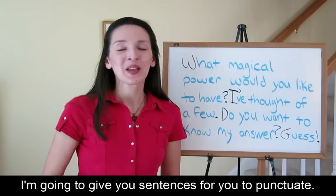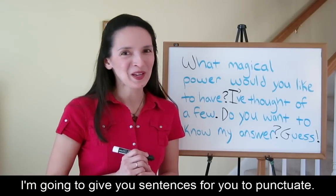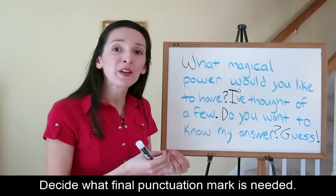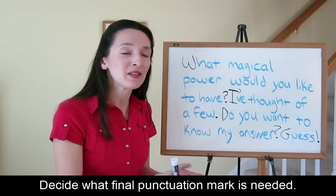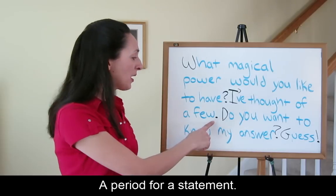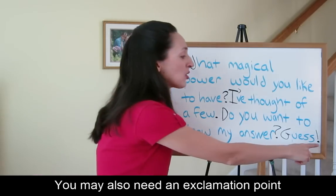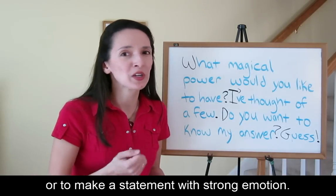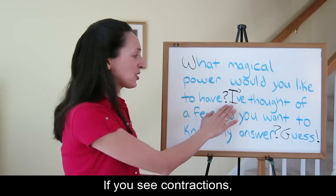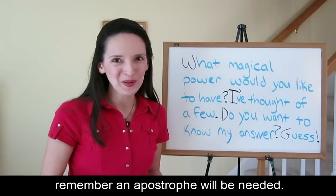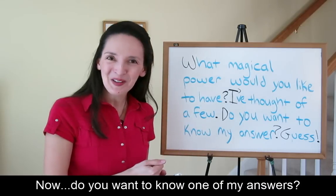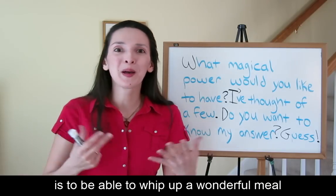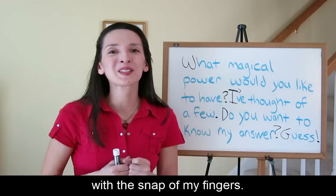Now it's your turn. I'm going to give you sentences for you to punctuate. Remember to start your sentences with a capital letter. Decide what final punctuation mark is needed: a question mark for a question, a period for a statement. You may also need an exclamation point for an urgent command or to make a statement with strong emotion. If you see contractions, remember an apostrophe will be needed. Now, do you want to know one of my answers? One of the many magical powers I'd love to have is to be able to whip up a wonderful meal with a snap of my fingers.